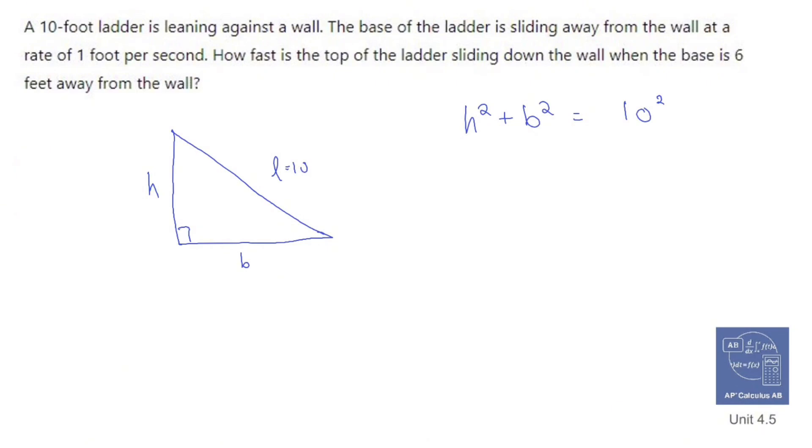Now what I need to do is I need to use related rates and DDT both sides. So I'm going to take the derivative with respect to T of both sides. Alright, because this is mentioning my ladder sliding away from the wall at a rate of 1 feet per second and I care about the speed at the top of the ladder sliding down. So that would be I'm looking for DHDT and I know what DBDT is.